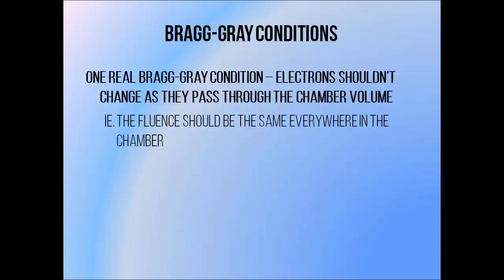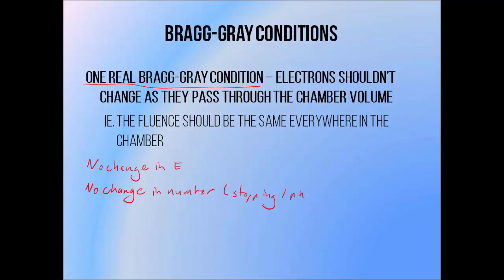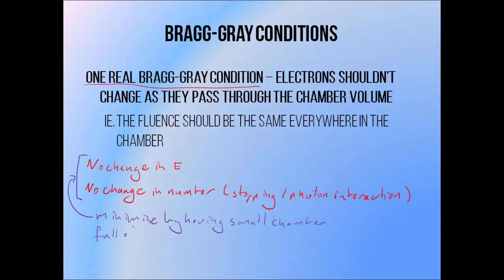All of these conditions can really be grouped into one: that electrons shouldn't change as they pass through the chamber volume. That means they shouldn't change energy, and there shouldn't be any change in number due to stopping or due to photon interactions. In MeV beams, ionisation chambers fit these conditions fairly well by having small volumes filled with air, which has an extremely low density, so it doesn't take much energy from electrons as they pass through, and in MeV beams it doesn't absorb many photons either.